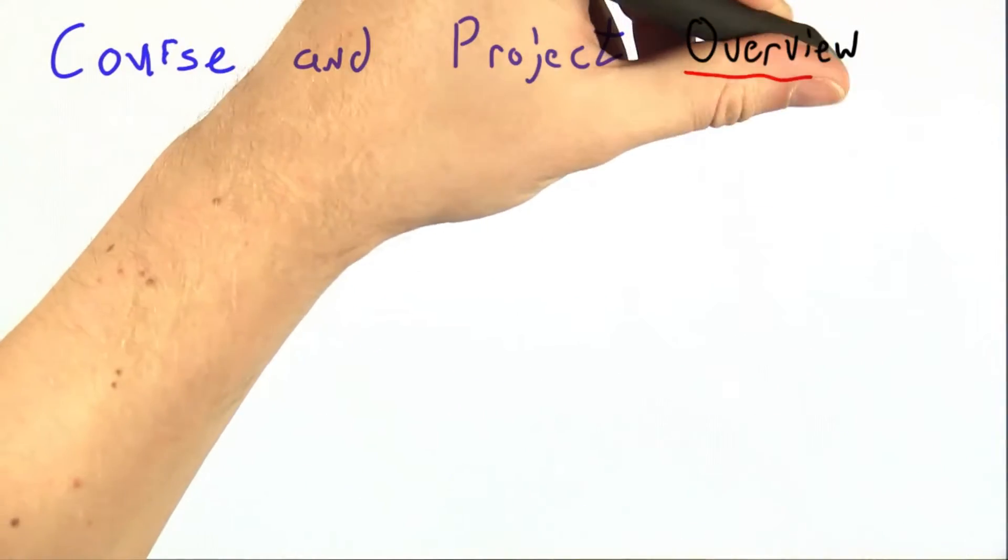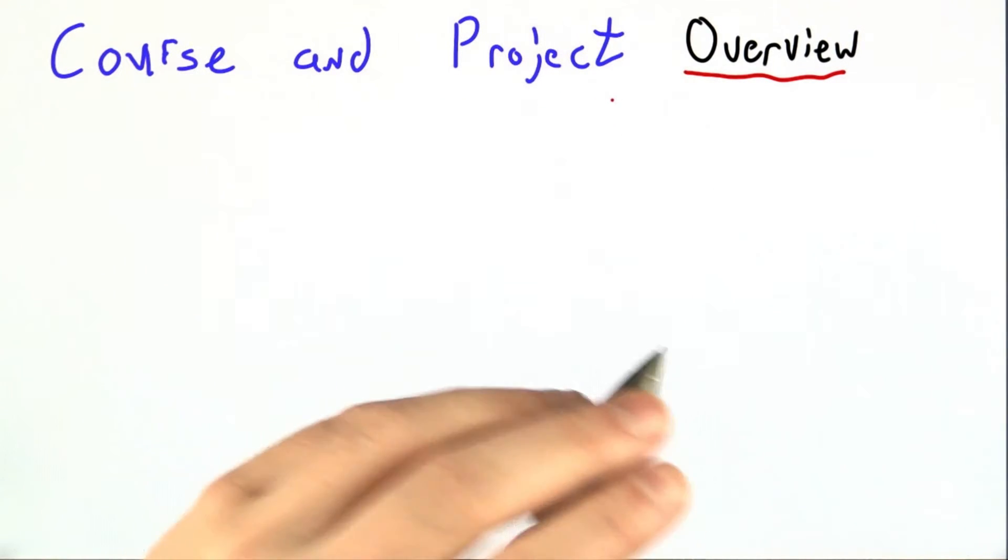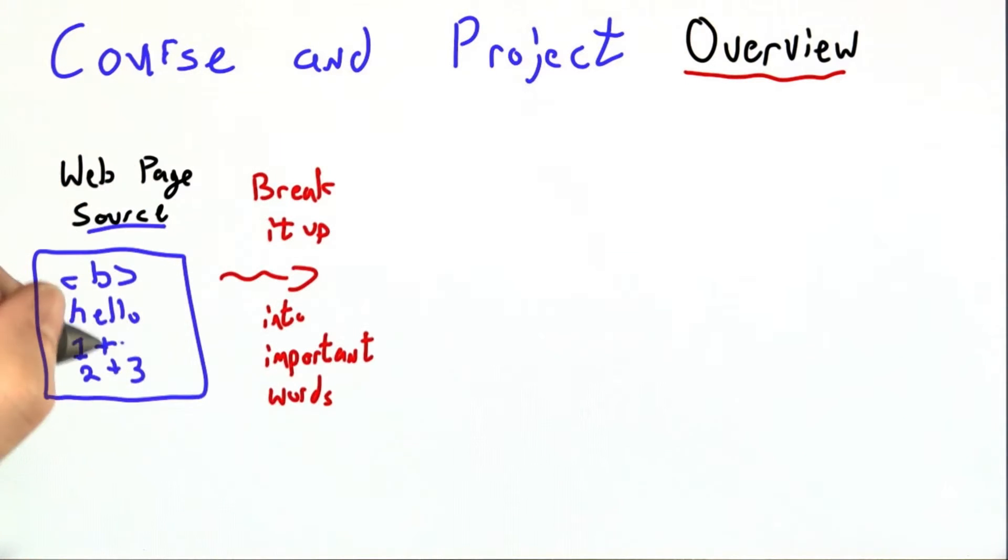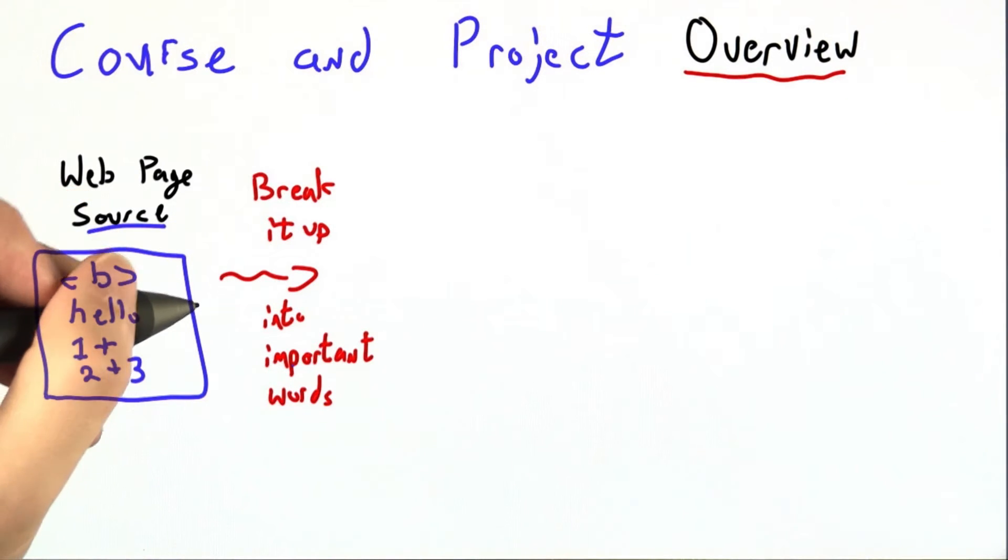So let me give you a brief overview, in pictures more or less, of how this course and the overarching project will go. We start with the source to a web page, which is in HTML and JavaScript. Our next main step is to break that source into important words, just like we could break an English sentence into important words.